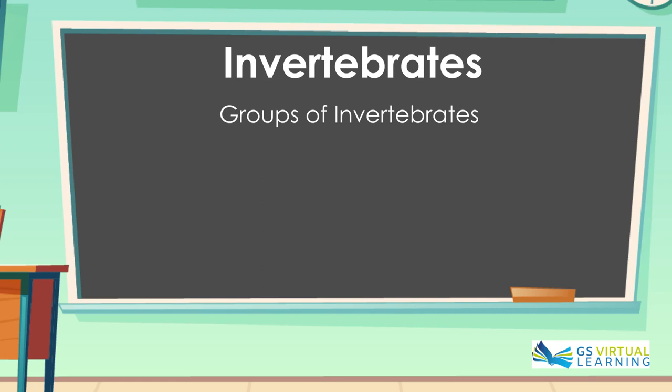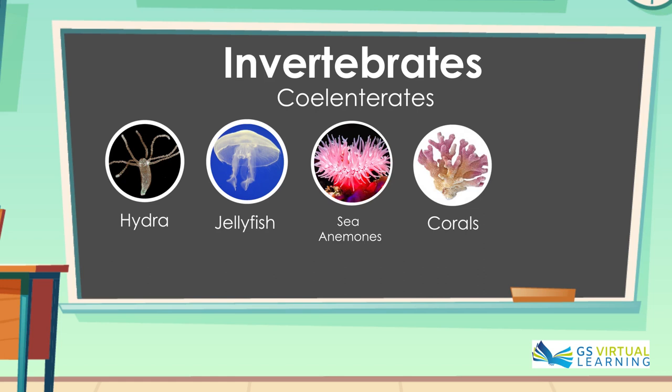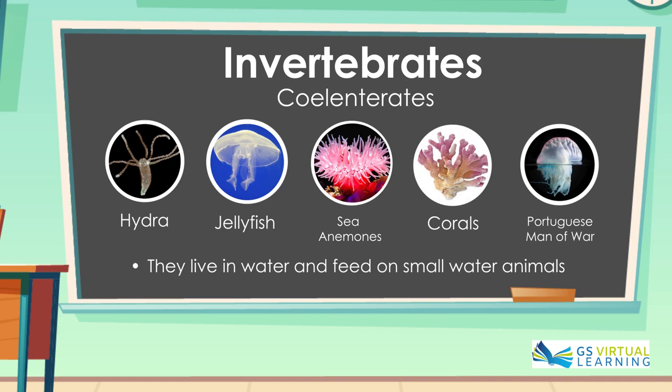The first group are the Cylenterates. They include Hydra, Jellyfish, Sea Anemones, Corals and Portuguese Man of War. They live in water and feed on small water animals.